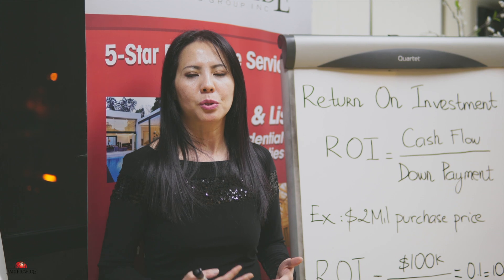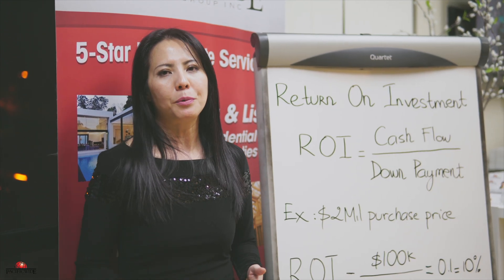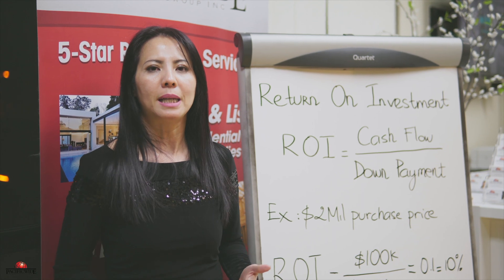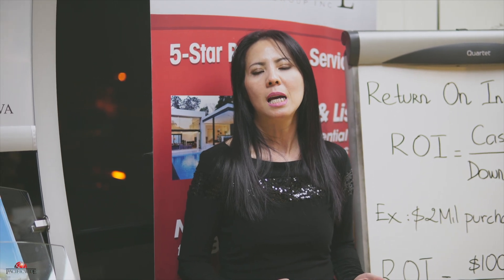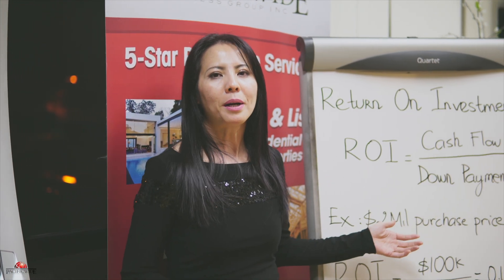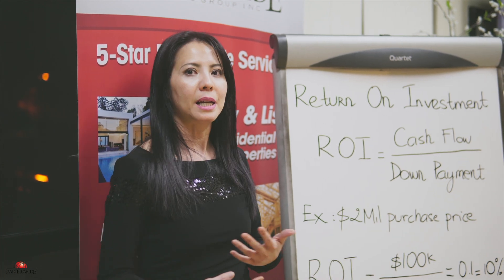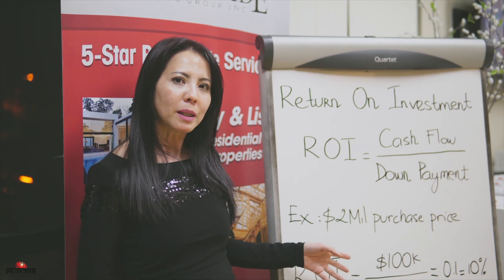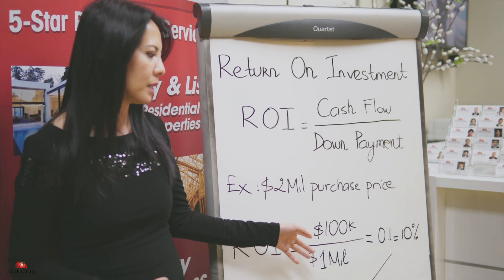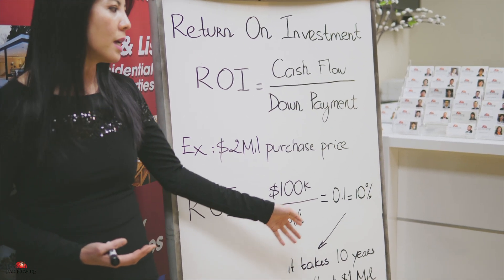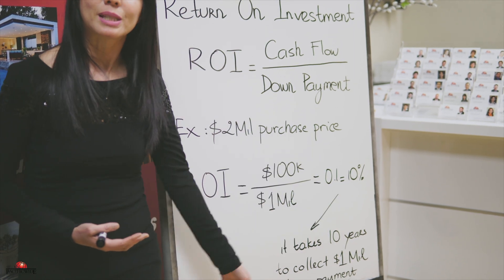Let's do one example so that it's easier to understand. For example, you're buying a $2 million property and you want to put a $1 million down payment. From the listing agent or from the seller, you have a lot of data, and your agent can help you do the calculation to find out the expected cash flow for one year. For example, you will have $100,000 cash flow for one year. Plugging into the formula, Return on Investment equals $100,000 cash flow divided by the down payment of $1 million, which equals 0.1, meaning 10%.